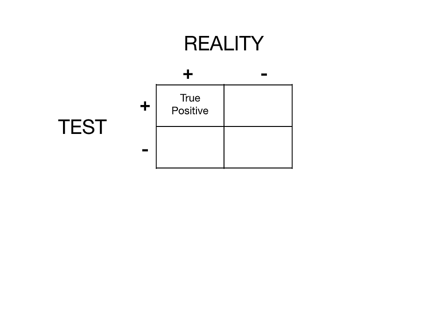Now let's look at the box just below that. If in reality you have cancer, but the test comes back negative and says you don't have cancer — but in reality you do — that would be a false negative. You have it in real life, but the test is telling you that you don't. So therefore that's a false negative.